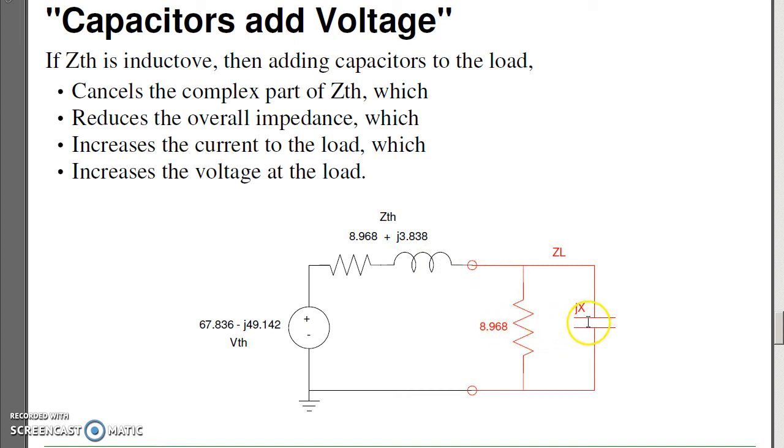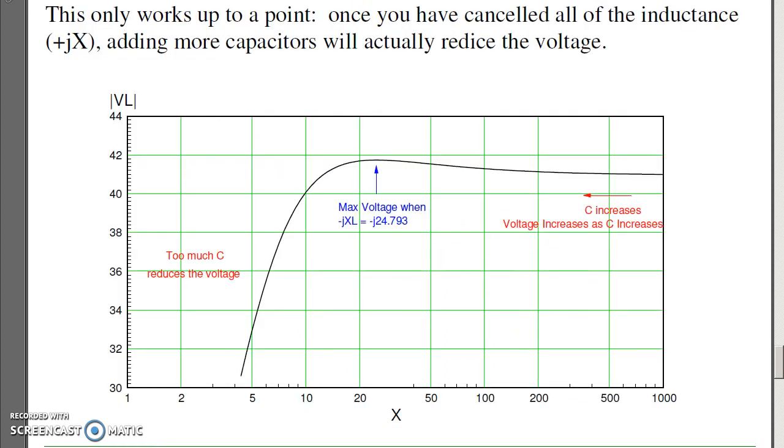That only works up to a point. Once I've added enough capacitance to cancel the entire reactance part, adding more capacitors makes things actually worse. So up to a point, if I add capacitors, this is going right to left.